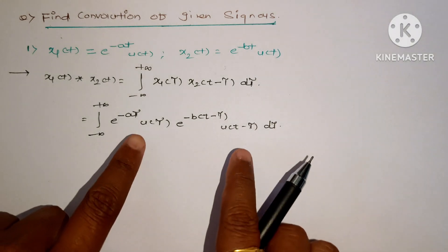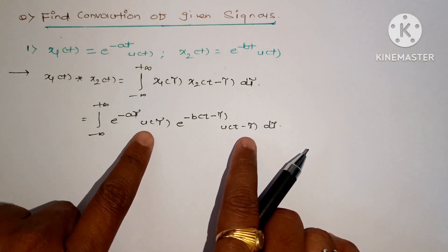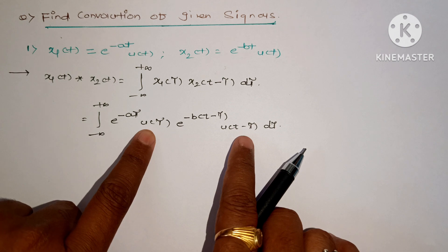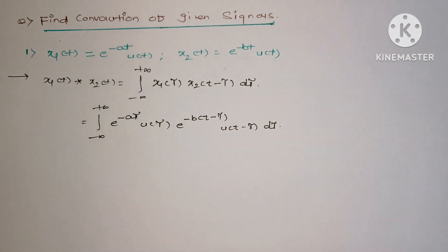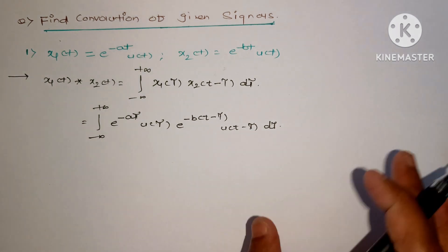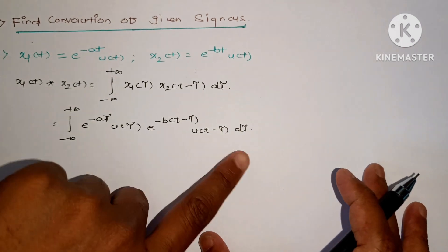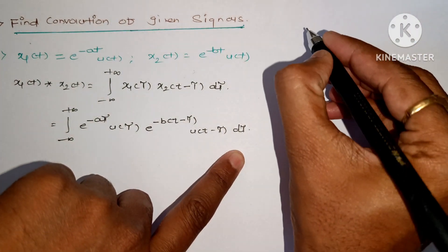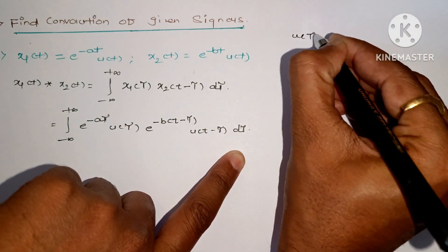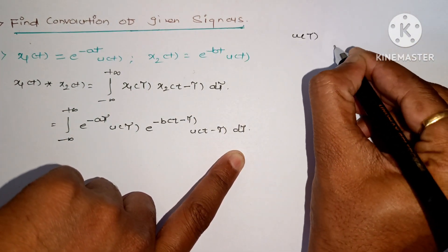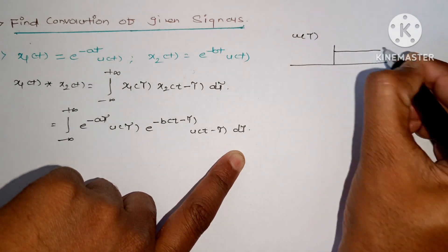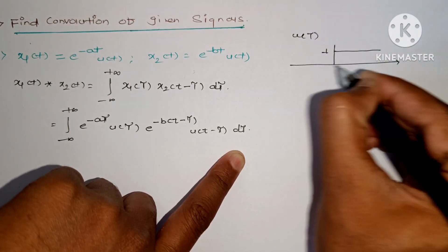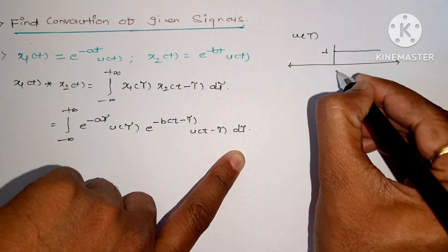Now if we look at the unit step functions, we have a multiplication of u(τ) and u(t minus τ). First we will analyze u(τ). As you know, u(t) has value 1 for all positive values of t.